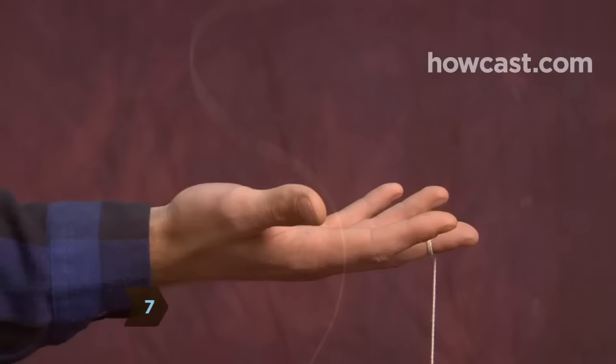Step 7: Turn your hand over so that your palm is facing the floor and sharply tug the string the second the string is fully extended.